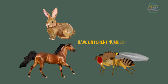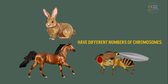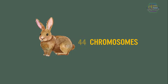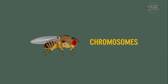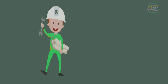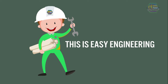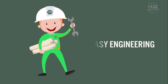Different animals also have different numbers of chromosomes. For example, a horse has 64, a rabbit has 44, and a fruit fly has 8 pairs, and many more. All of this contributes to the survival of the fittest. So learners, now we've learned something about genetics and how we are actually all related to each other. That's all for now — I hope you learned something today. Once again, this is Easy Engineering. Have a nice day!